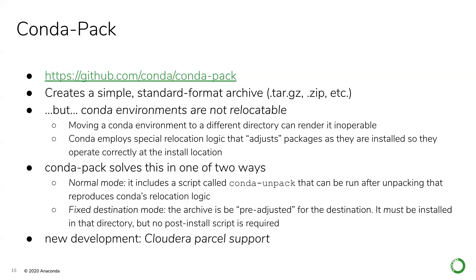Conda Pack solves this in one of two ways. In normal mode, it adds a script to your environment called conda-unpack that can be run after you unpack the environment, which reproduces the relocation logic and makes all necessary adjustments. If you know in advance where the environment is going to be installed, Conda Pack can actually pre-adjust all of the packages so that as long as you unpack the archive in exactly the location specified, no further post-install script is required. In a recent development — a pre-release version, but it will be tagged very soon — we now have native support for Cloudera parcels in Conda Pack. The file format is extremely similar; we just needed to add a little metadata and set some standard directory structures.